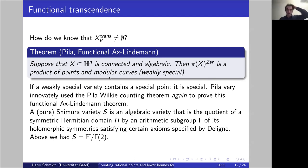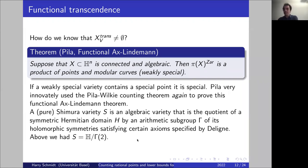Now, the André-Oort conjecture itself is about Shimura varieties, of which the product of modular curves is one example. In general they are given by some Hermitian symmetric domain quotiented by an arithmetic subgroup of its symmetry group, satisfying certain axioms rigorously specified by Deligne. These axioms ensure the quotient is an algebraic variety — proved by Baily-Borel. In our example, the upper half-plane is the Hermitian symmetric domain and Γ₂ is the arithmetic subgroup.